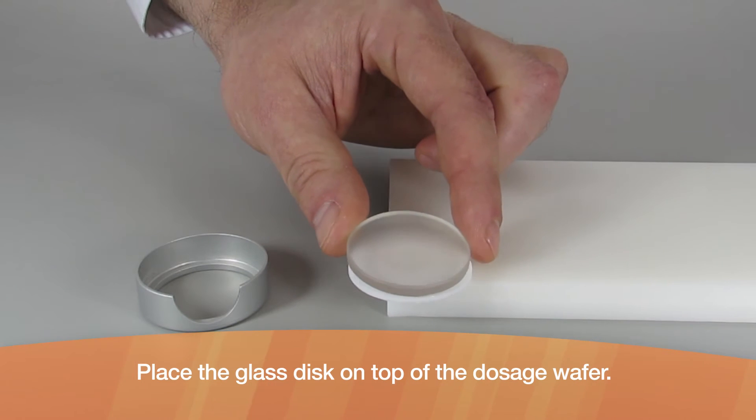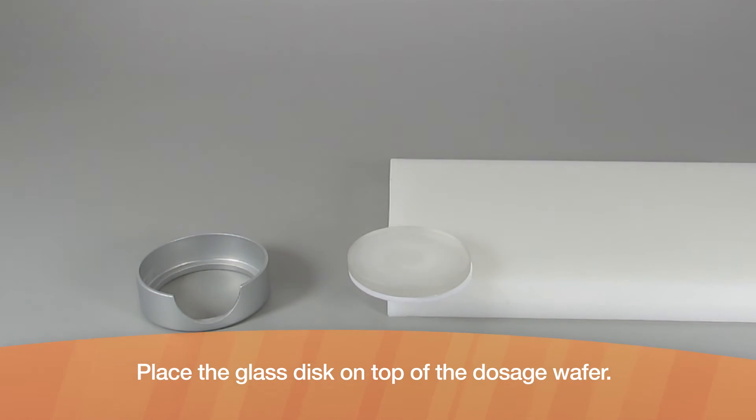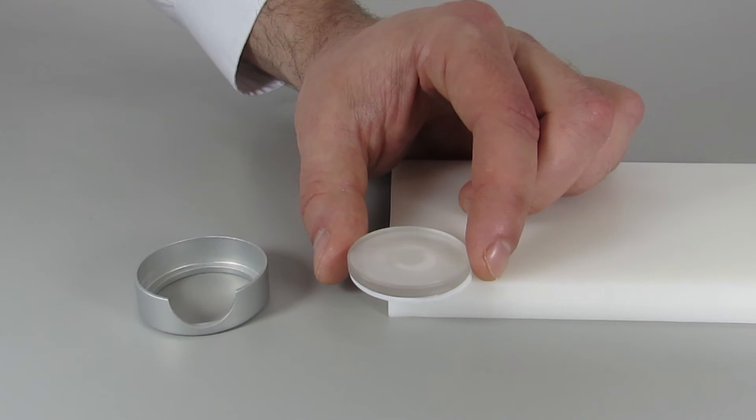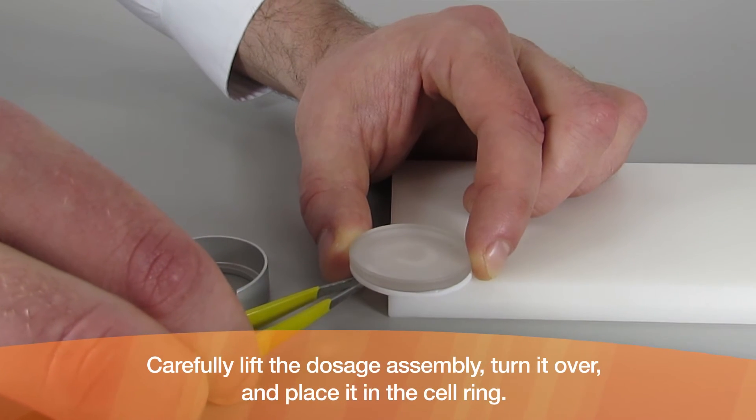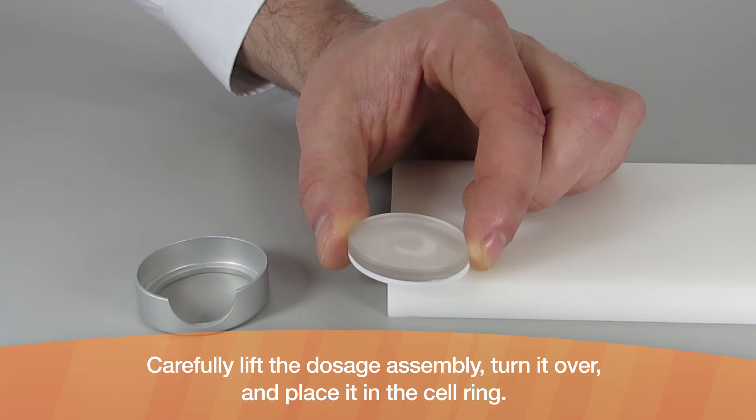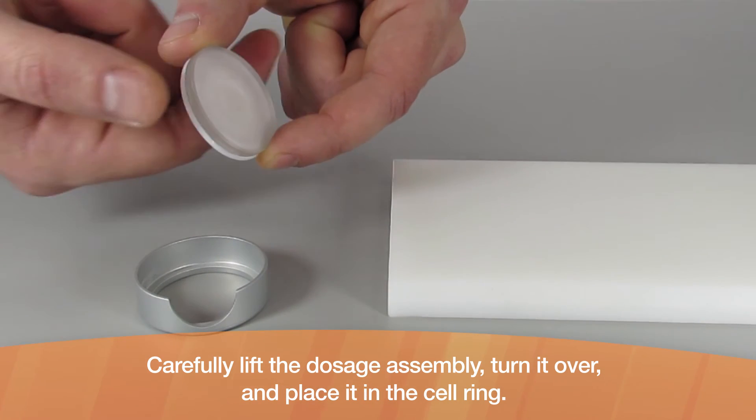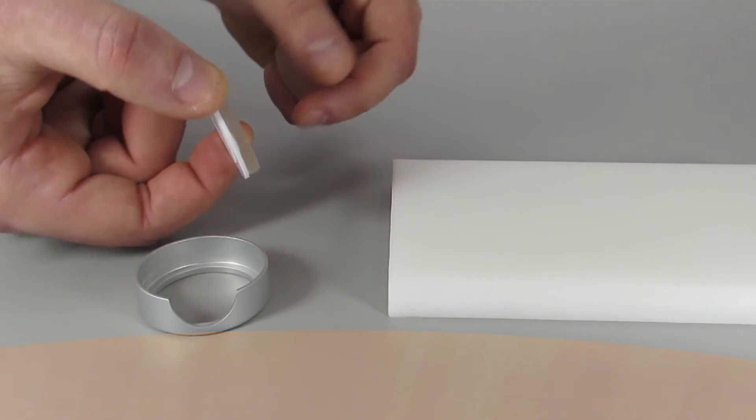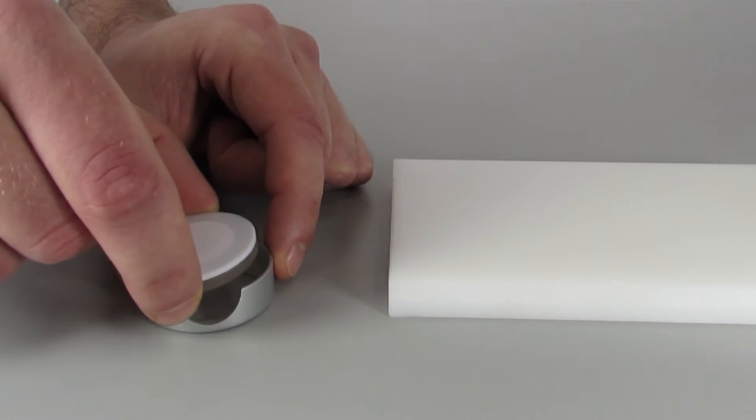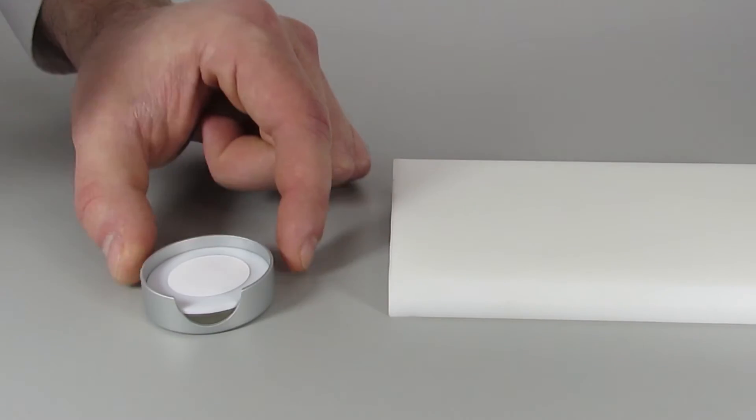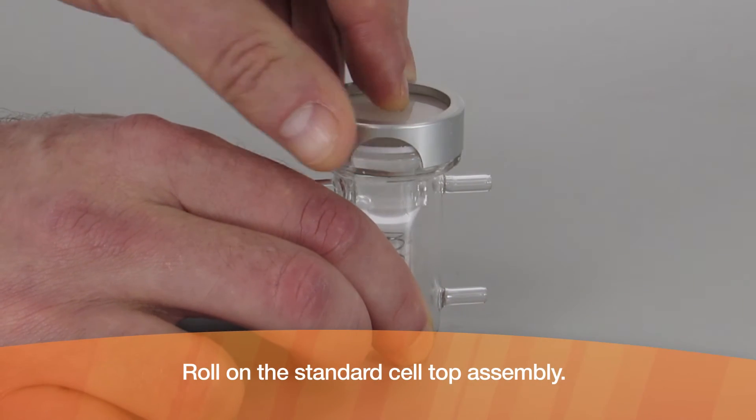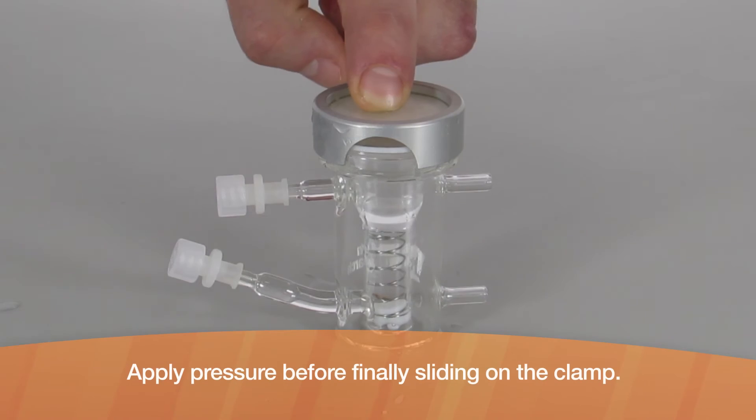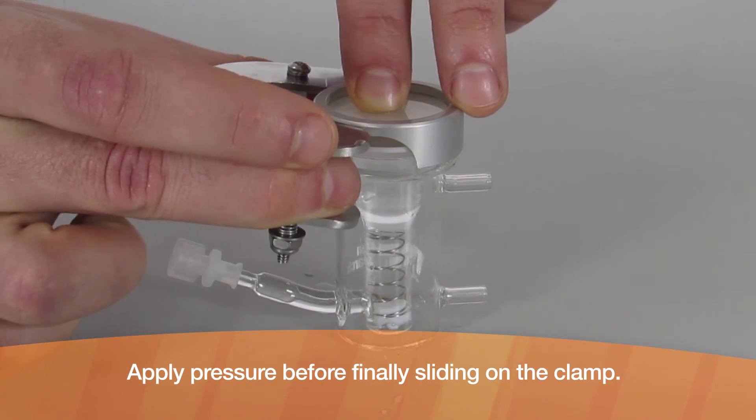Place the glass disc on top of the dosage wafer. Carefully lift the dosage assembly, turn it over, and place it in the cell ring. Roll on the standard cell top assembly and apply pressure before finally sliding on the clamp.